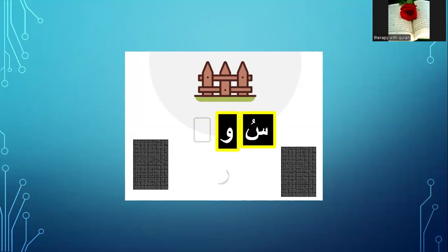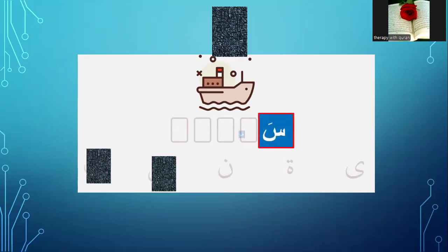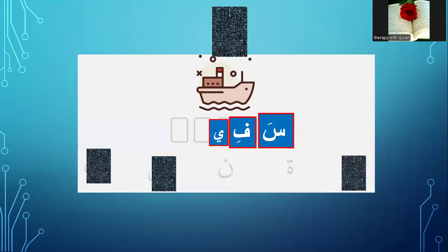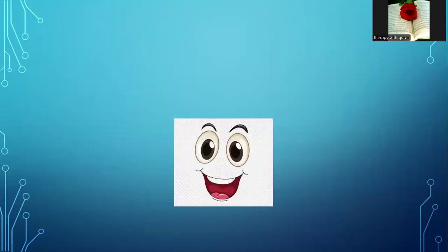The last letter — ra. Surah. Good. What can you see? Yes, it's saffirah. The first letter — sad. The second — fi. Good.